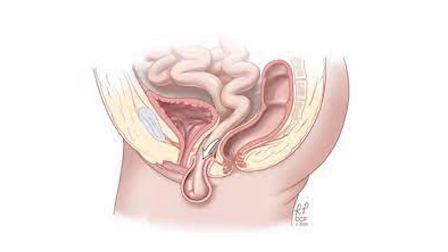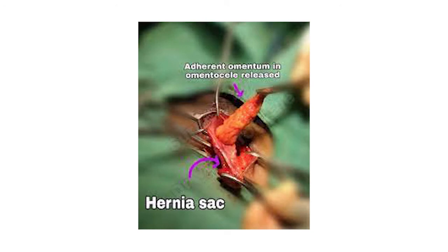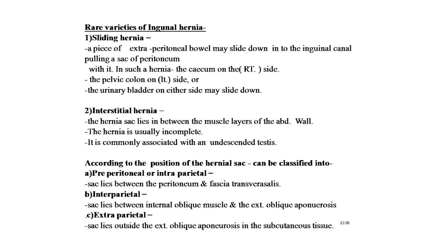Here is a good picture showing the complete hernia and the omentocele, with the omentum clearly seen in the hernial sac. Rare varieties of inguinal hernias: Sliding hernia — a piece of extraperitoneal bowel may slide down into the inguinal canal pulling a sac of peritoneum with it; on the right side the cecum, on the left side the pelvic colon, or the urinary bladder on either side may slide down. Interstitial hernia — the hernia sac lies between the muscle layers of the abdominal wall, usually incomplete, commonly associated with undescended testis. According to position it can be classified as preperitoneal, interparietal — sac between the internal oblique muscle and external oblique aponeurosis — and extraparietal — sac outside the external oblique aponeurosis in the subcutaneous tissue.